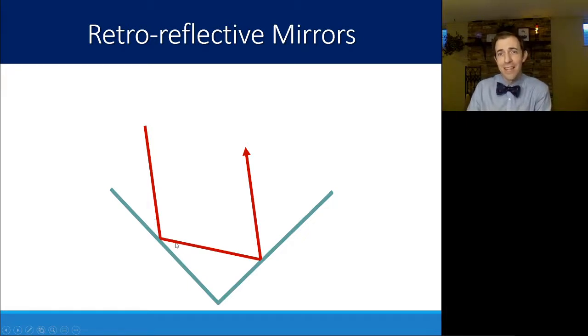Each time it bounces follows the law of reflection. So the incident and the reflected angle are equal. And notice here, it bounces in, bounce, bounce, and then leaves at exactly a parallel ray to the way it came in.